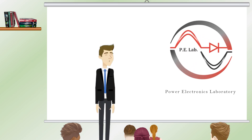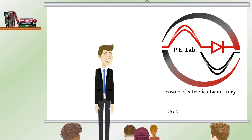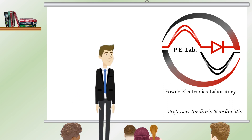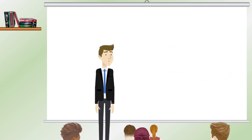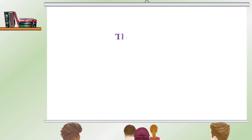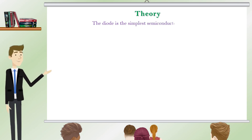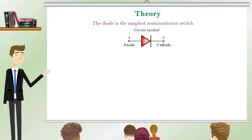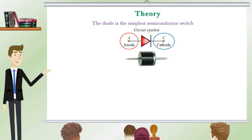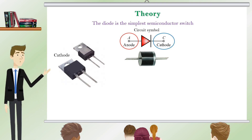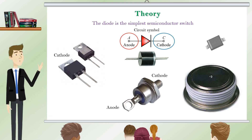Are students familiar with the operation and characteristic VI curve of a power diode? Hopefully after this tutorial video they will be. The diode is the simplest semiconductor switch. The two terminals are called anode and cathode. Diodes are manufactured in various packages depending on their power rating.